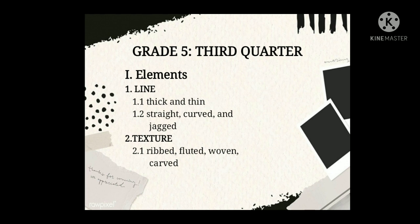Straight lines, or classic lines, provide structure to a composition. They can be oriented to the horizontal, vertical, or diagonal axis of a surface. Straight lines are by nature visually stable, while still giving direction to a composition.